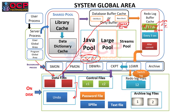Once the checkpoint has updated the information into the control file and data file header, it signals the database writer. The database writer takes the updated 6500 value block from the database buffer cache and writes it into the data file. Once the database writer writes that block into the data file, the value is permanently saved, and the old value stored in the undo segment is released.